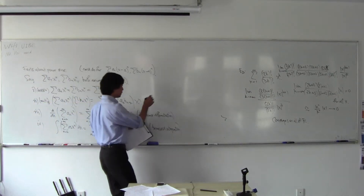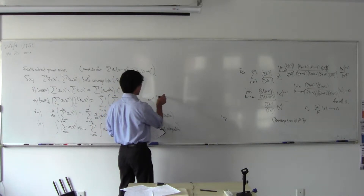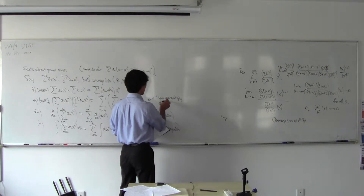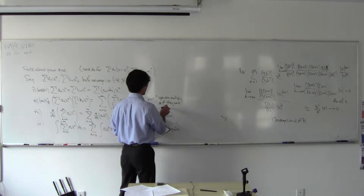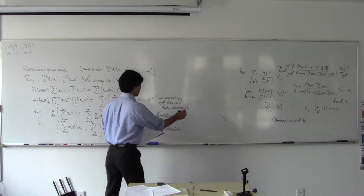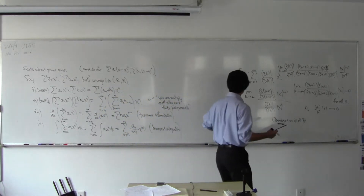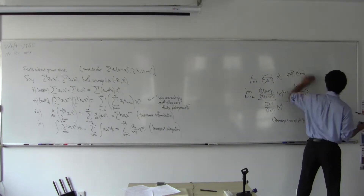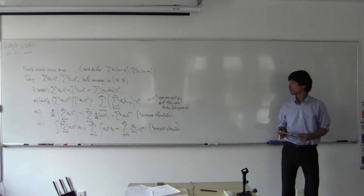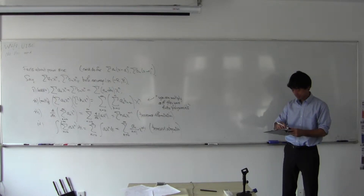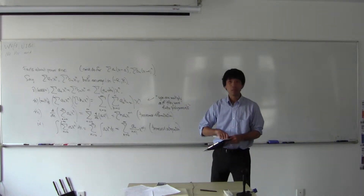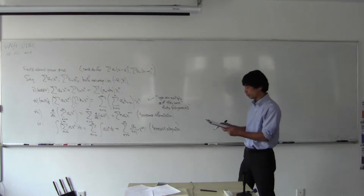So this multiplication rule basically says you can multiply power series as if they were finite polynomials. Let me give some examples that I hope will clarify this.